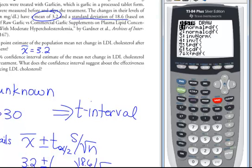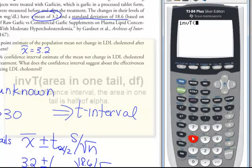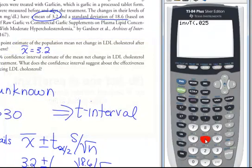We're going to use number 4, which is inverse T, and it has a syntax of alpha, which is the alpha that's in one tail, and also the degrees of freedom. Okay, so we get 0.025, because we split it up over the two tails, and our degrees of freedom, we said, would be 46.